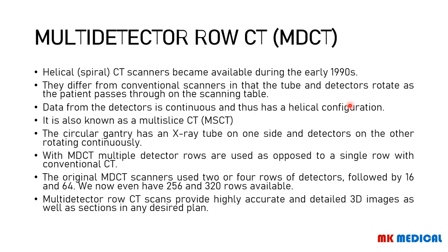These scanners have different rows of detectors. The original multi-slice CT had about two to four rows. Later it advanced to 16, then 64, and now we even have 256 and 320 rows of multi-detectors. The higher the number of rows, the more detailed the image. You can get a very accurate, highly detailed 3D image, which is essential in many areas of medicine.